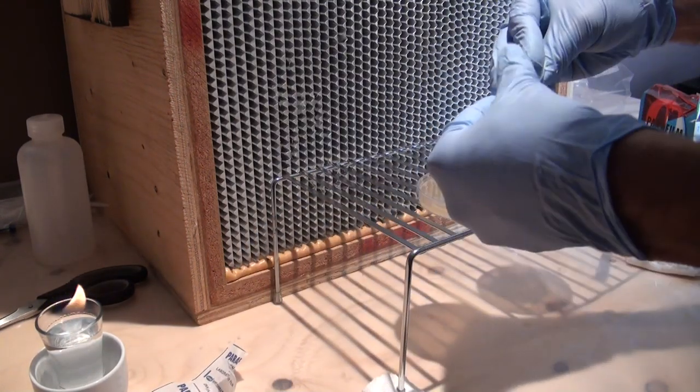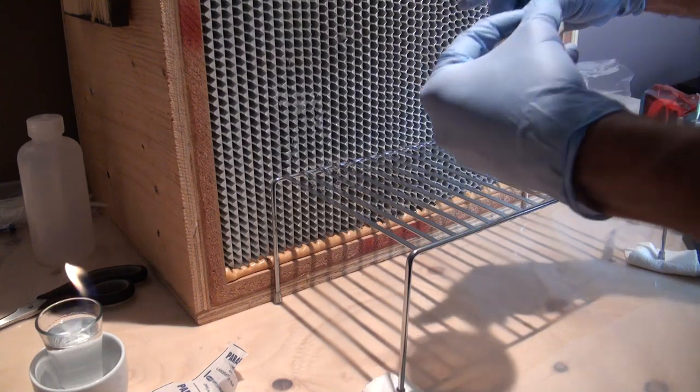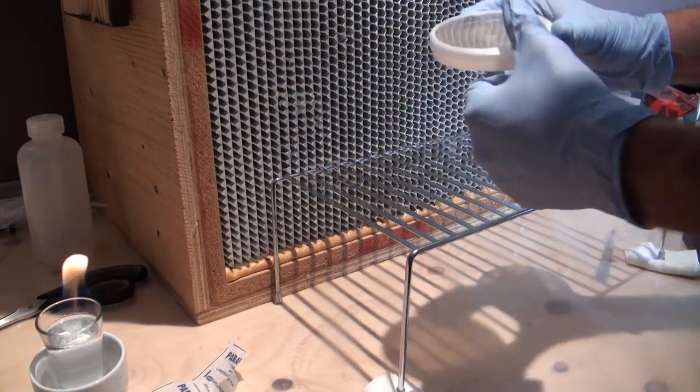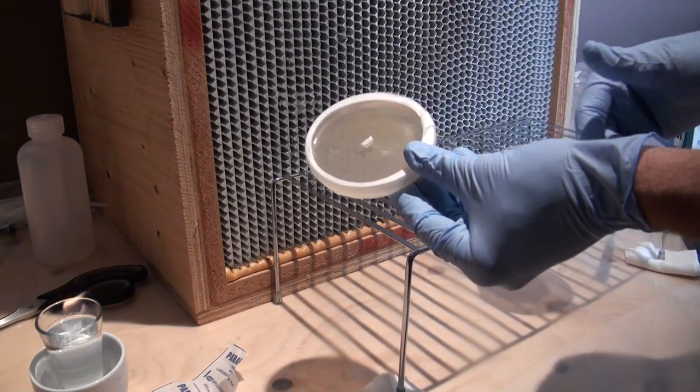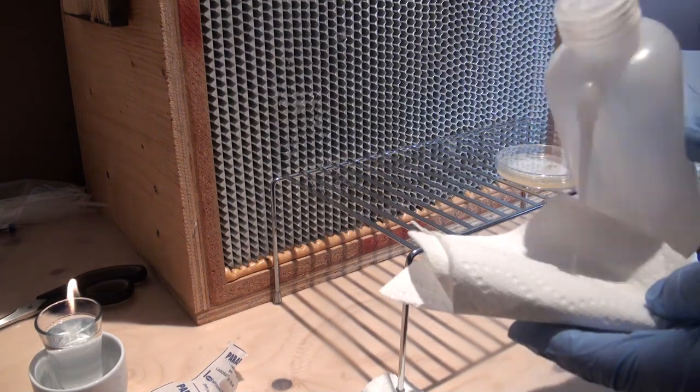Now take some parafilm, wrap your new dish, and that's it. This should start to grow out over the next couple days. I'm going to place that aside and we're going to go ahead and do the next transfer.